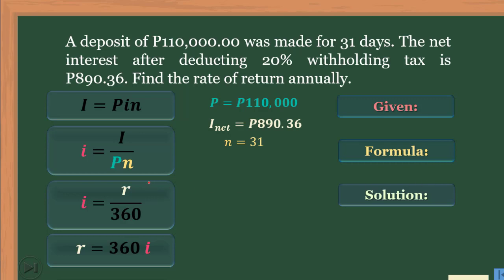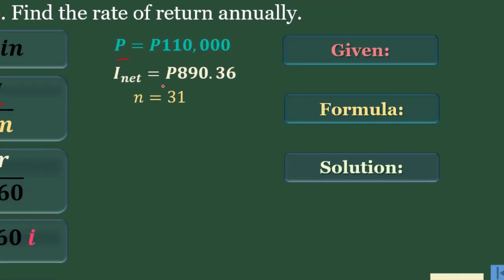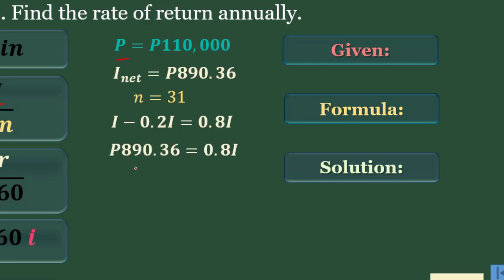Based on the given, we have the principal and the number of interest periods. We don't have the interest I yet, so we compute for I based on the given in the problem. The net interest equals I minus 20% of I, which is equivalent to 0.8I, or 80% — since 100% minus 20% equals 80%. So based on the problem, 80% of I is equivalent to 890.36.